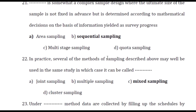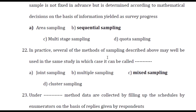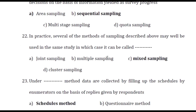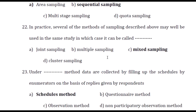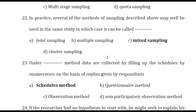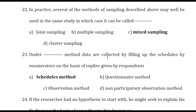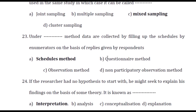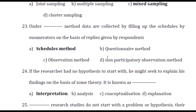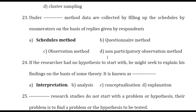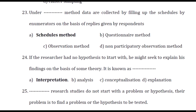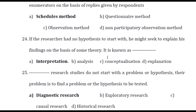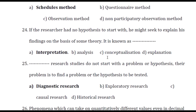Sequential sampling is a complex sampling design where the ultimate size of the sample is not fixed in advance but is determined according to mathematical decisions on the basis of information yielded as the survey progresses. In practice, several methods of sampling may all be used in the same study, which is called mixed sampling.